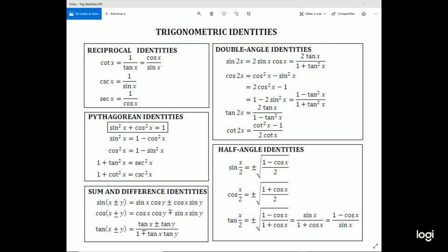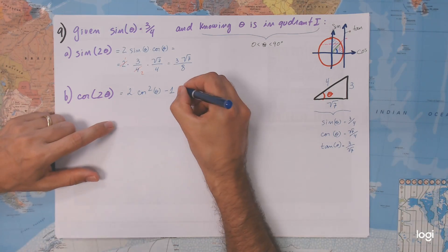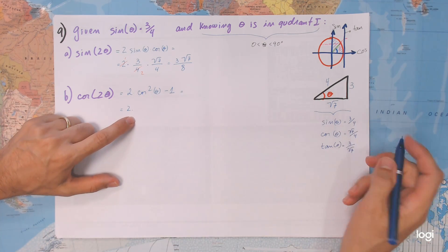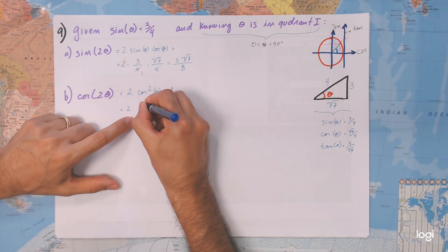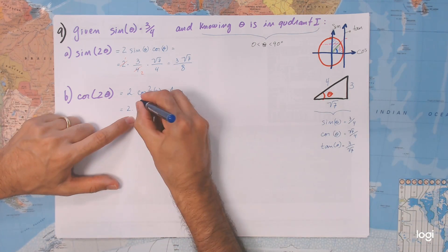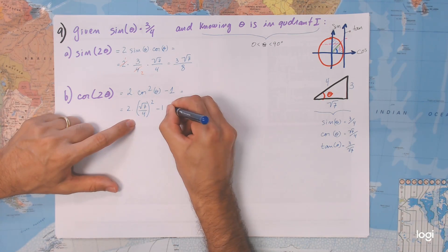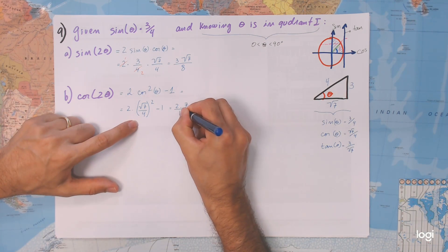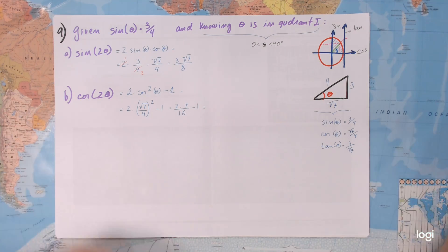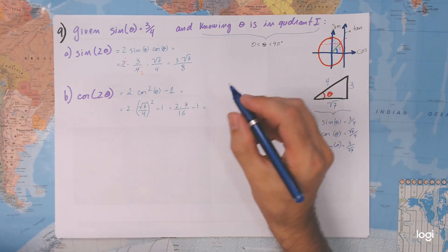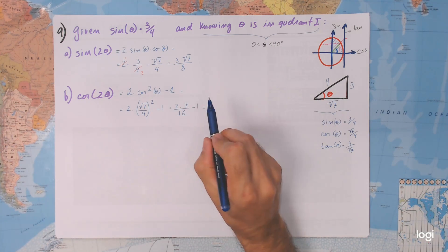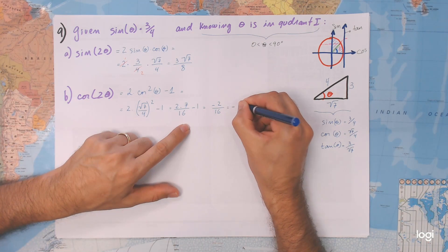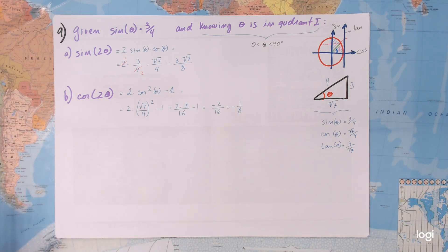Let's get back to the paper. Now: 2 times — what is cosine squared of theta? That is square root of 7 over 4, squared, minus 1. This is 2 times 7 divided by 16, minus 1. That gives us 14 over 16 minus 16 over 16, so this is negative 2 over 16, which is negative 1 eighth.